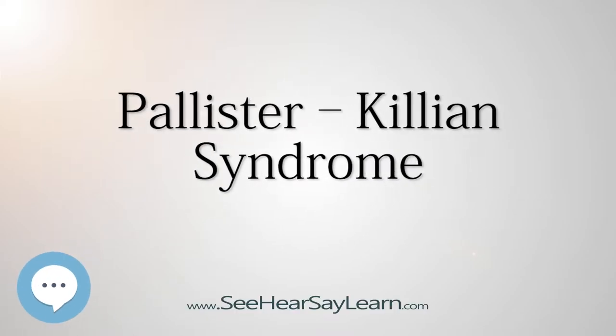Pallister-Killian syndrome, also known as Tetrasomy 12P mosaicism or Pallister-Mosaic aneuploidy syndrome, is an extremely rare genetic disorder occurring in humans. Pallister-Killian occurs due to the presence of the anomalous extra-isochromosome 12P, the short arm of the 12th chromosome.